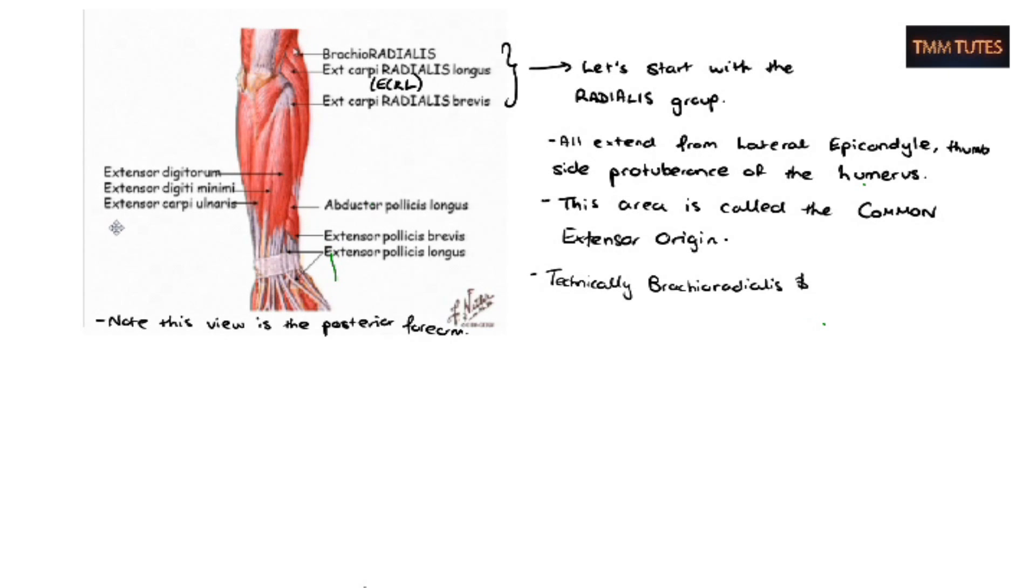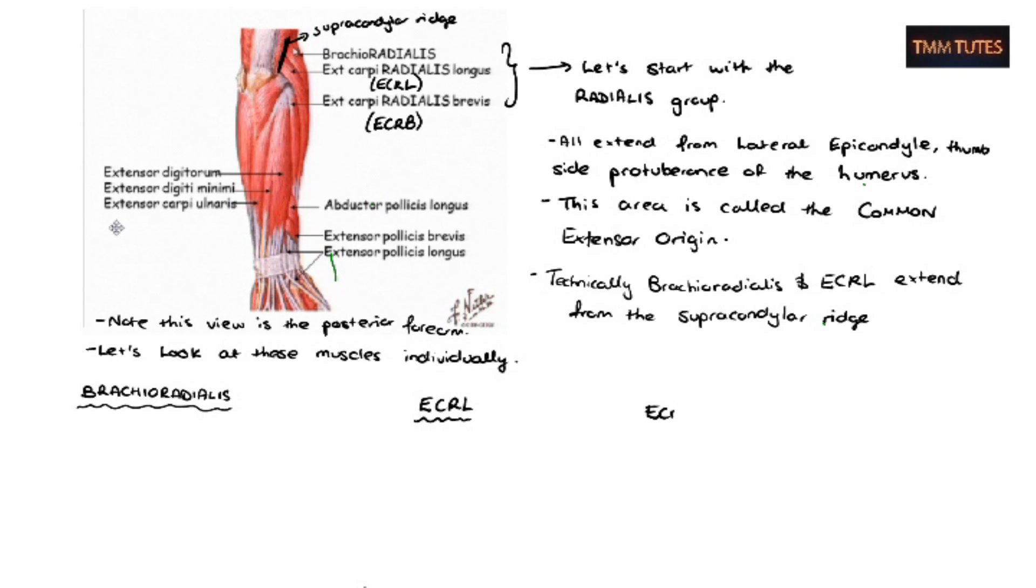It actually makes a dimple right on that protuberant beak called the common extensor origin. So technically, brachioradialis and extensor carpi radialis longus actually extend a little bit higher up from the supracondylar ridge, which is just above that lateral epicondyle. Also note that the common extensor origin is actually a central tendon through which all the extensor group and radialis group, except brachioradialis and ECRL, actually insert into the lateral epicondyle.